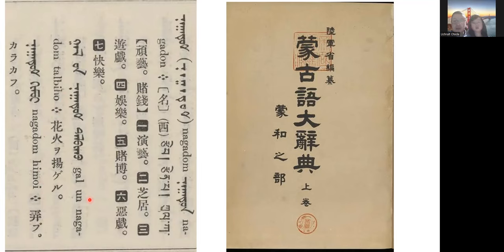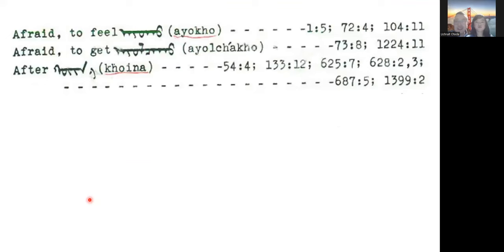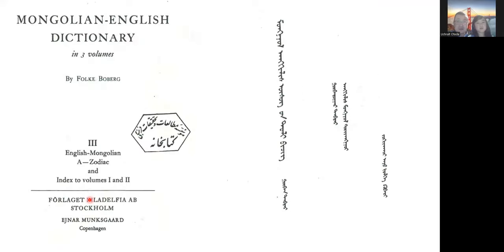That's a brief overview of Mongolian dictionaries — I mostly focused on Mongolian-English, but I know our viewers are from all over the world. There may be Mongolian-Italian, Mongolian-French, or Mongolian-German dictionaries too. If you have any better resources, please comment and share the link. All of these dictionaries are useful but have both advantages and disadvantages.